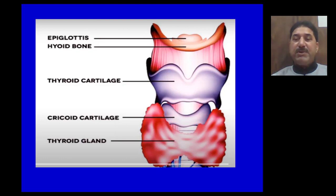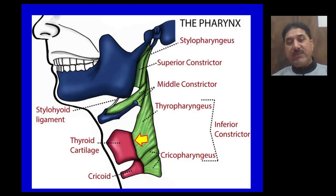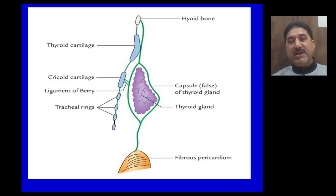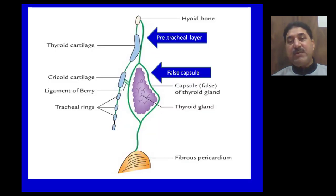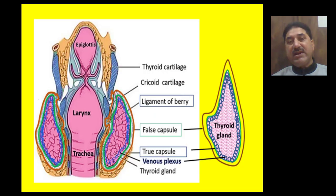Let us explain this one by one. In the midline there are tracheal rings. On the tracheal rings lies the isthmus of the thyroid gland. Thyropharyngeus and cricopharyngeus are attached to the thyroid and cricoid cartilage respectively. Pre-tracheal deep cervical fascia invests the thyroid gland and forms its false capsule. A thickening of this capsule posteriorly is called the ligament of Berry, which attaches the thyroid gland to the trachea.